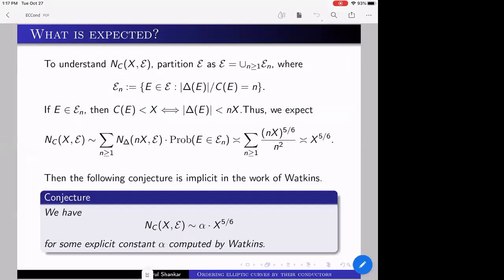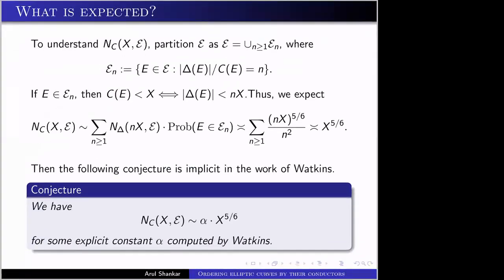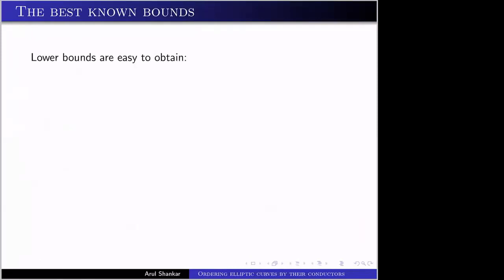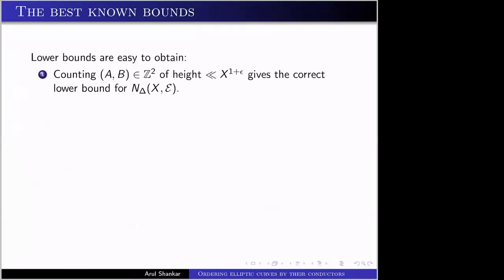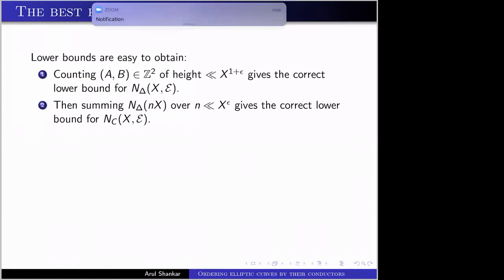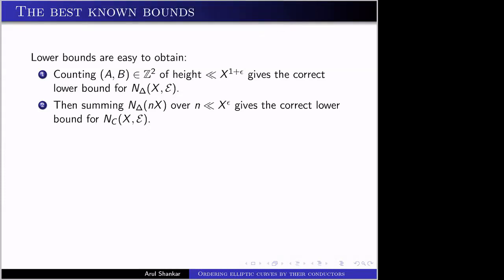That covers the heuristics. Now what is known? Lower bounds are easy to obtain: if you count points of height less than X^{1+ε} using geometry of numbers, this immediately gives the correct lower bound for N_Δ. Summing these lower bounds over small N gives the correct lower bound for N_C as well. So lower bounds are unconditionally known and fairly easy to obtain.